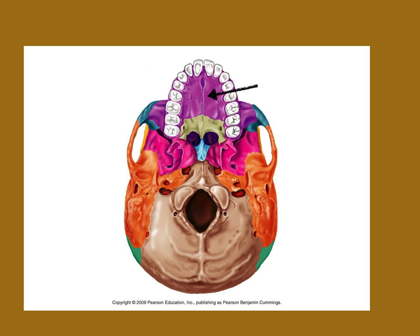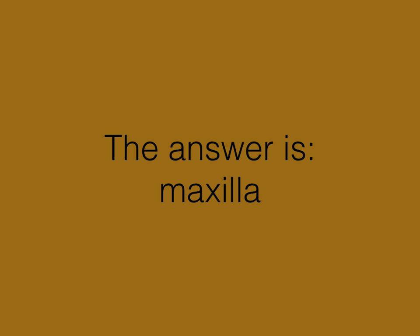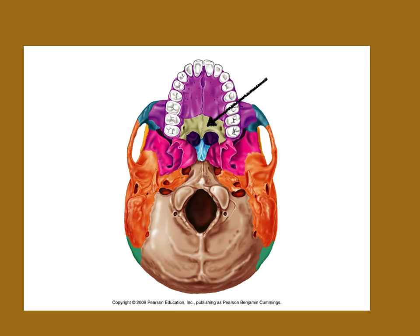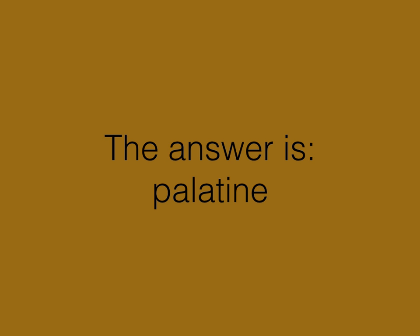Moving on to part three. This is the inferior view of the skull without the mandible. Just want you to name the bone here. That is the maxilla. And again, the bone. That is the palatine bone. It makes up part of the hard palate.